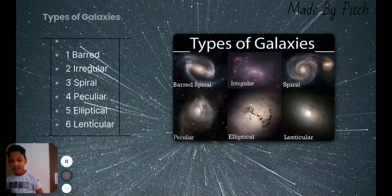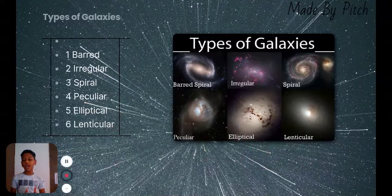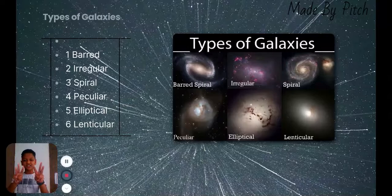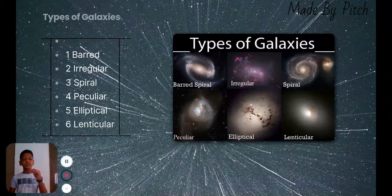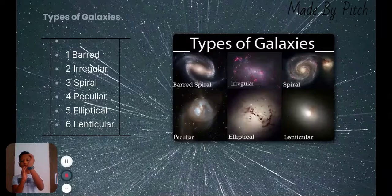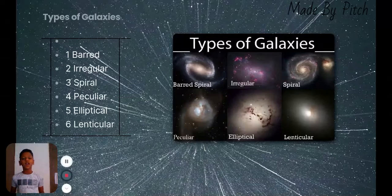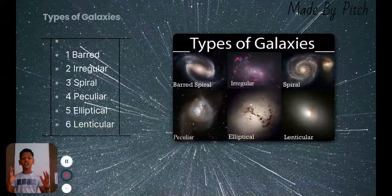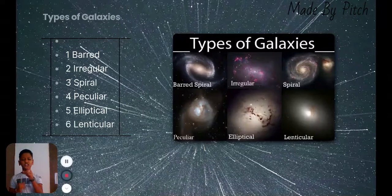So, let's start. Types of Galaxy. There are six types. Six types of galaxies. One, barred, which is like opposite of S. And then, irregular, which doesn't have a shape. Then,